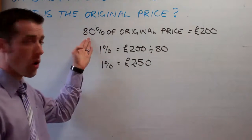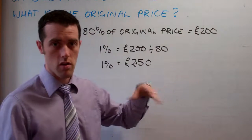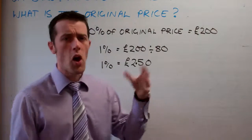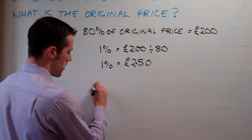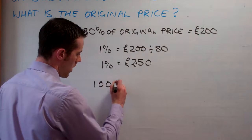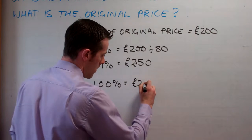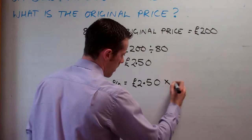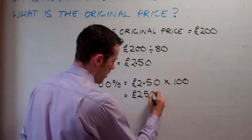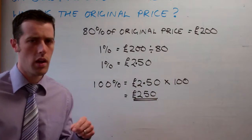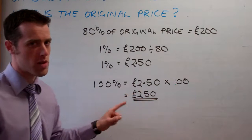So 1% is equal to £2.50. If we do 200 divided by 80, we get 2.5 — and remember it's money, so it's £2.50. Then to make that up to 100%, we just multiply by 100. So 100% equals £2.50 times 100, which gives us £250.